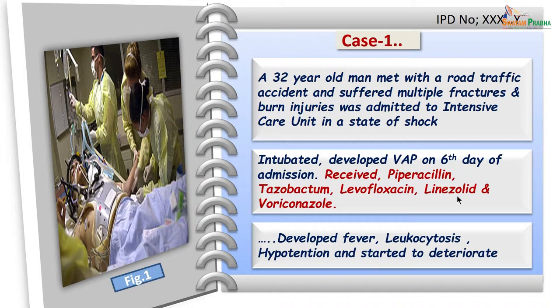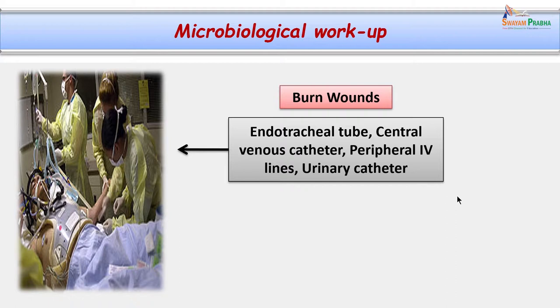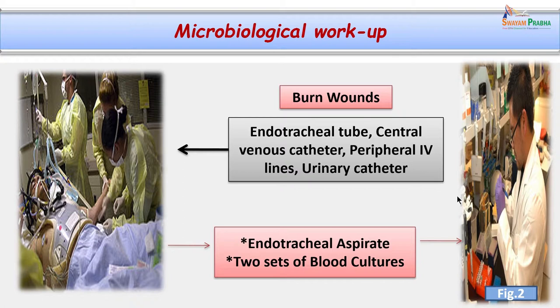In spite of this broad spectrum antibiotic therapy, he started developing fever on the eighth day of treatment. The fever continued, he also developed leukocytosis, went into hypovolemic shock, and the condition of the patient started to deteriorate. The patient was exposed to many sources of microorganisms because he had an endotracheal tube in place, a central venous catheter, peripheral intravenous lines, and his bladder was catheterized. He was also having severe burn injuries which invited many microorganisms to invade him.